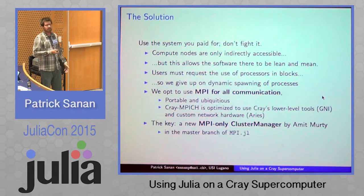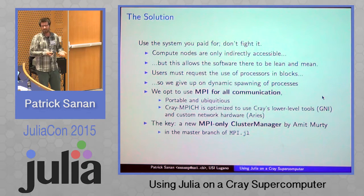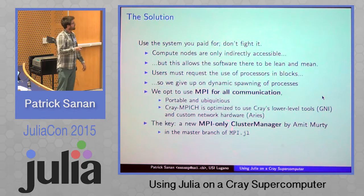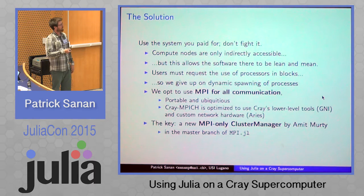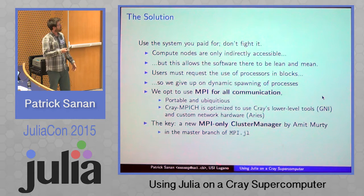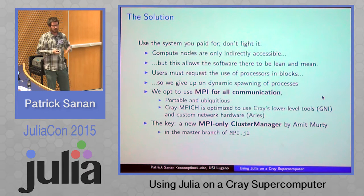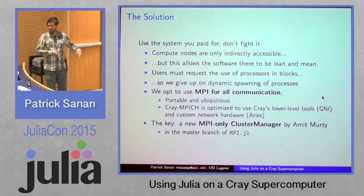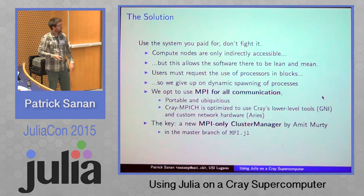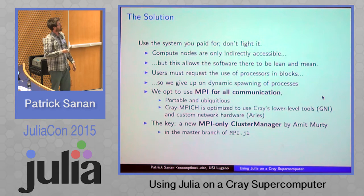That hardware is really what makes this a supercomputer. This Aries hardware is kind of the killer feature — the nodes are really Linux servers like you're used to. The key piece of software that let us actually do this in the end was all Amit's work, and it's actually not a huge amount of code. It's using MPI calls, and those have been optimized by Cray. So this is a very narrow way to get the job done that we need to do, and this is in MPI.jl right now.